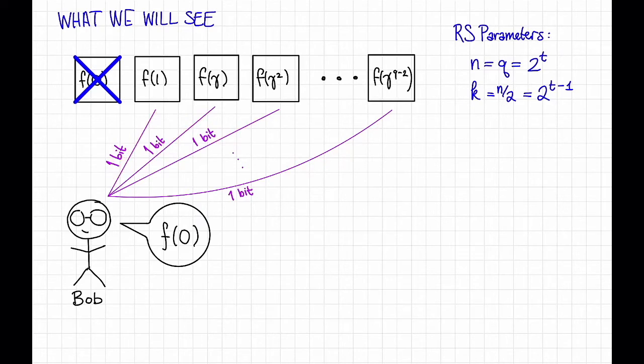So how good is this scheme? Well, the repair bandwidth is just n minus 1. Bob downloads n minus 1 bits. And is this good or bad? Well, let's compare to the naive scheme.